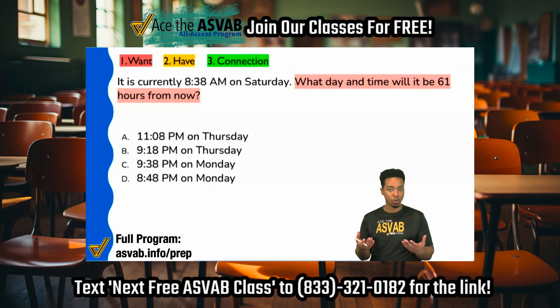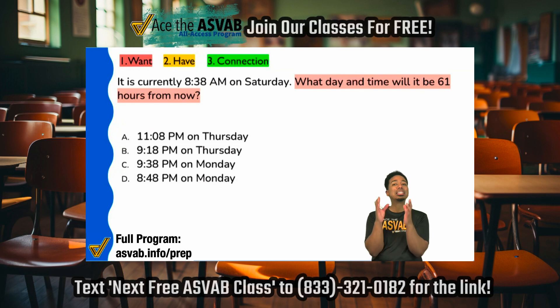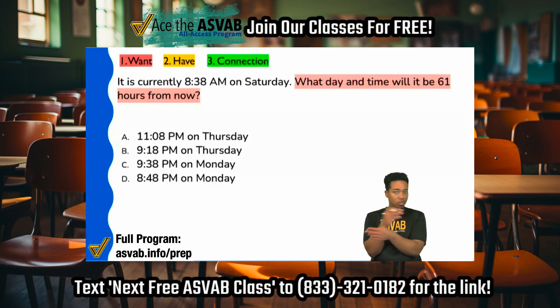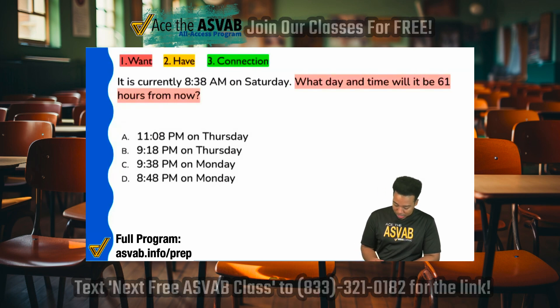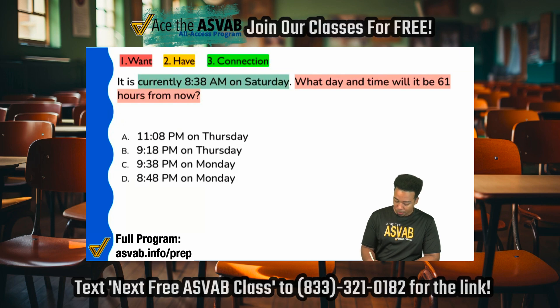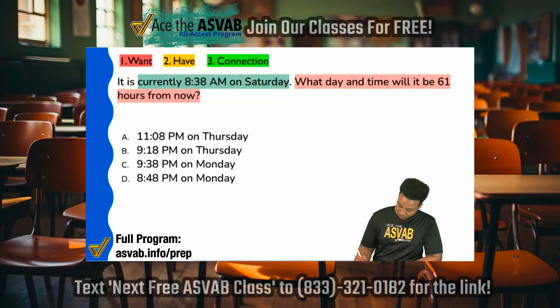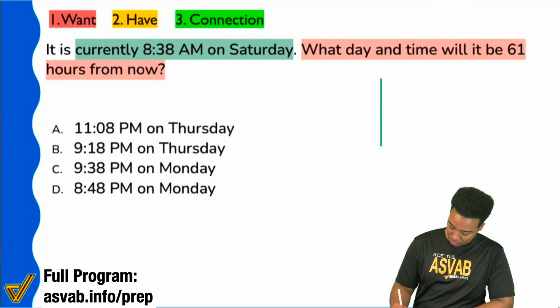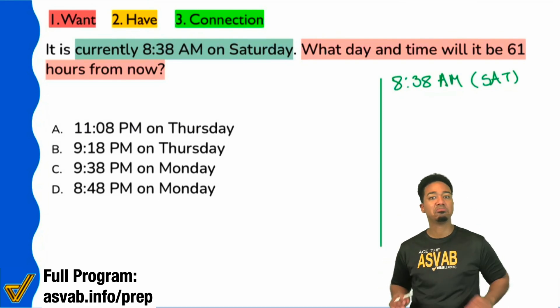Once we know our goal, then we're going to look to see what information we have to work with. Whatever time we're dealing with, we're adding 61 hours to it - that's all that matters right now, just add 61 hours. We are told very straightforward it's currently 8:38 AM on a Saturday. So we'll say that the current time right over here is going to be 8:38 AM and we'll write Saturday.